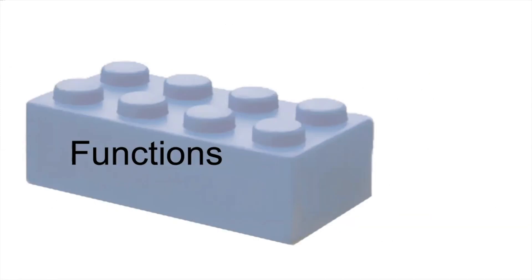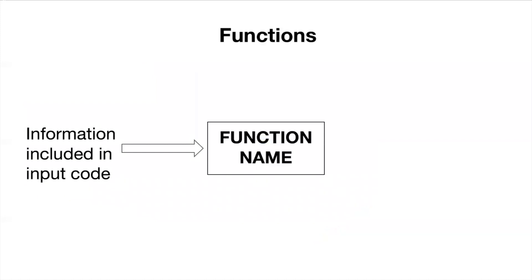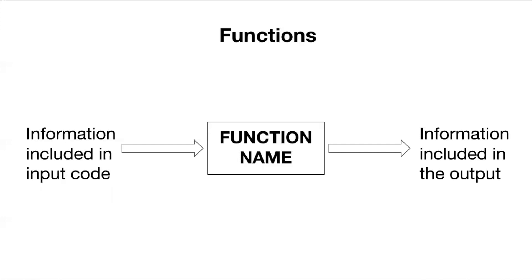Let's move on to the second building block of data manipulation, which is functions. I'm going to introduce functions through what's called a function diagram, and walk you through the different pieces, which gives an overview of what functions are and how to think about them. Starting with the function name in the middle, every function needs an input — information we include in the code in order to run the function. The function then does something behind the scenes and presents us with output, or specific information we've asked for. The basic structure is: input → function does something → desired output.